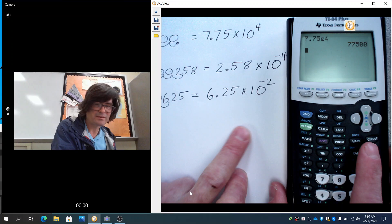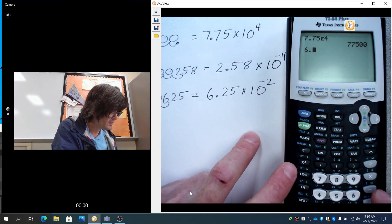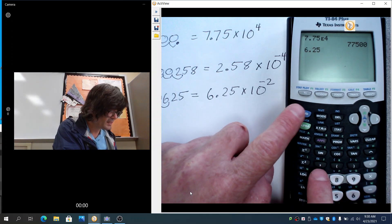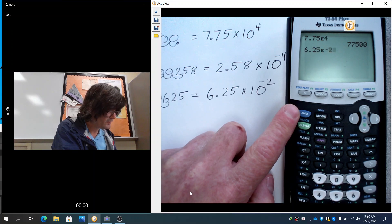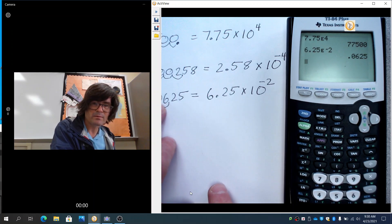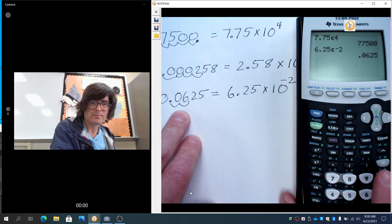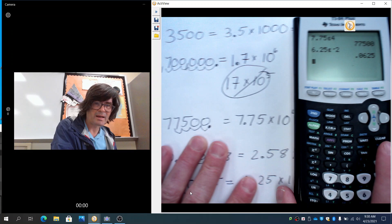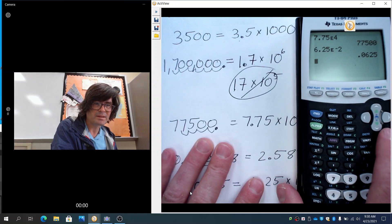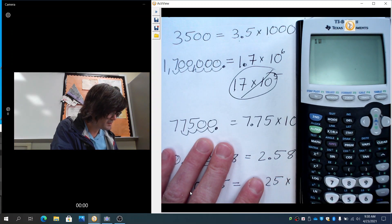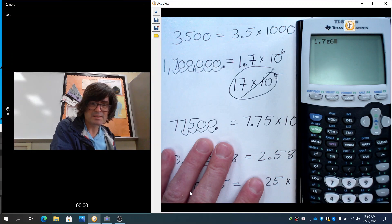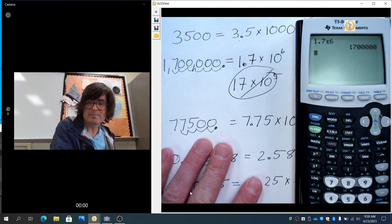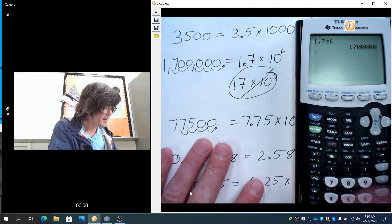With this guy, I just did 6.25 times 10 to the negative 2. 6.25 second EE negative 2. That's now my .0625 that I had a moment ago. And then finally up top, I had this 1.7 million. 1.7 EE 6. That's 1.7 million now. So that's how you can do it on the calculator.